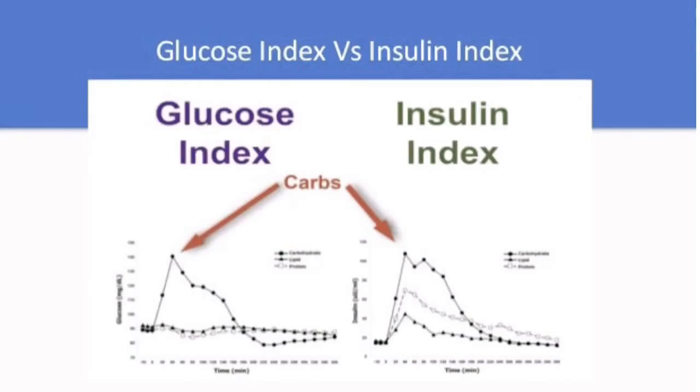I am going to talk about glycemic index and insulin index. The glycemic index is related to carbohydrate. What is the glycemic index? The glycemic index is very difficult to get blood sugar. If it is very difficult to get blood sugar, then the glycemic index will spike very easily. This is why the glycemic index is considered very difficult.